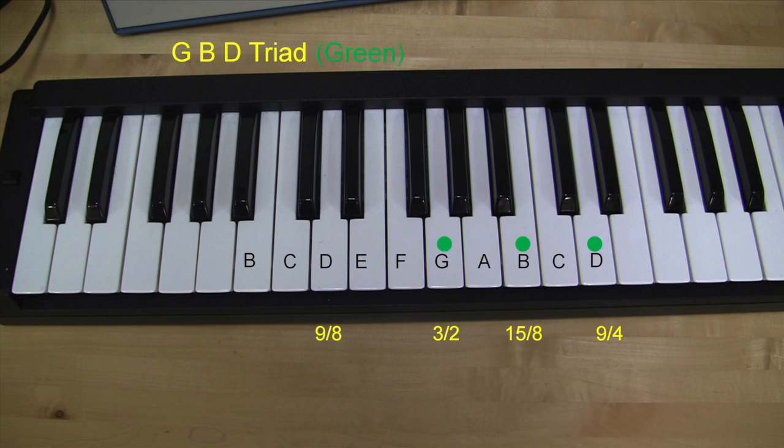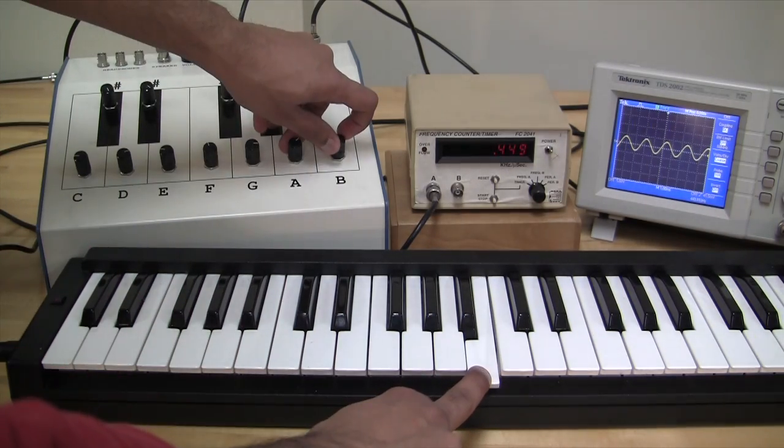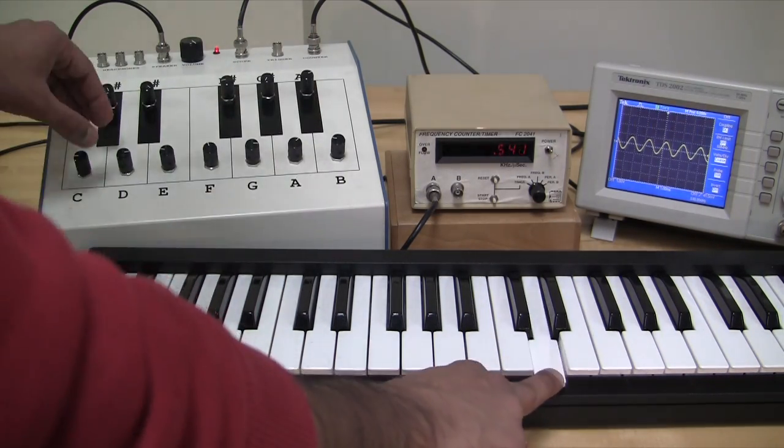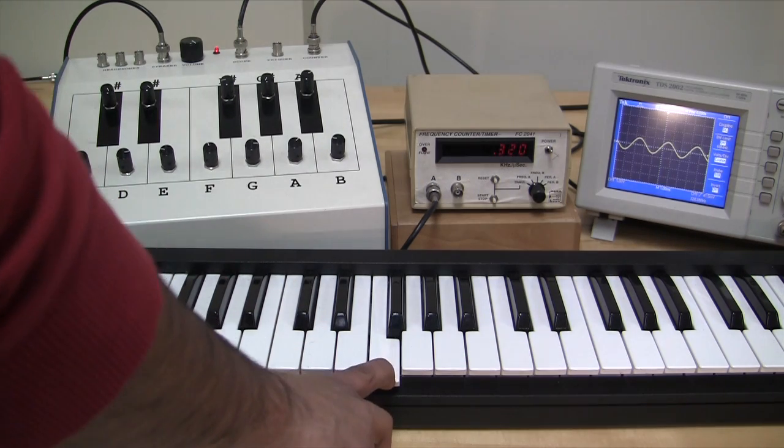After this, build another triad starting on G, that is G, B and upper D. Again, the frequency should be in the ratio of 4x5x6.